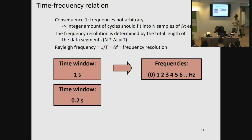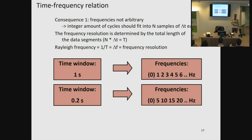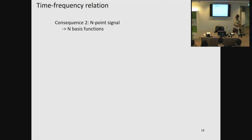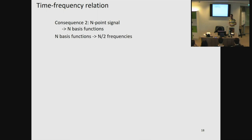If our time window is 0.2 seconds, we divide one by 0.2 seconds, giving a frequency resolution of five hertz, and we can estimate every multiple of five hertz. The second consequence is that for an n-point signal, we can only use n basis functions, and because for every frequency we need two basis functions — a sine and a cosine — for an n-point signal, we can only estimate n divided by two frequencies. That means the highest frequency we can estimate depends on our sampling frequency.